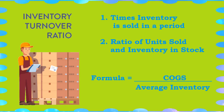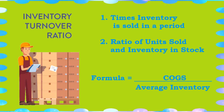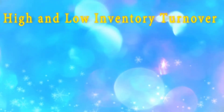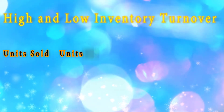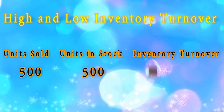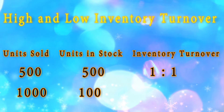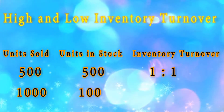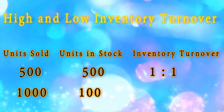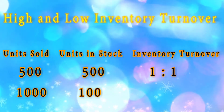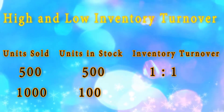It is calculated based on the cost of inventory, but to keep things simpler, here's an example just based on units. If you sold 500 units in a year and had 500 units in stock on average, your inventory turnover ratio was 1 to 1, usually just stated as 1. You could also say that you turned over your inventory once or had 1 inventory turn.